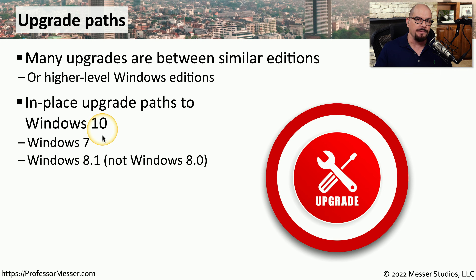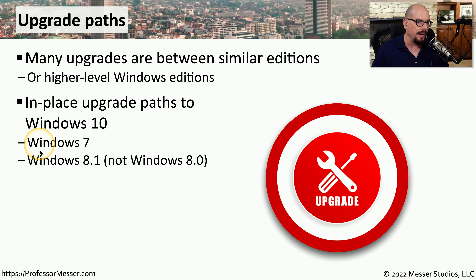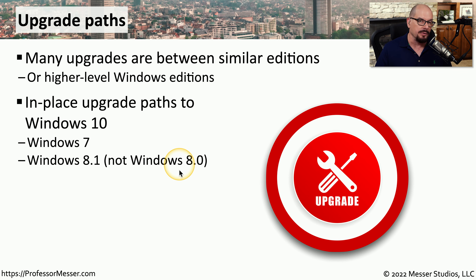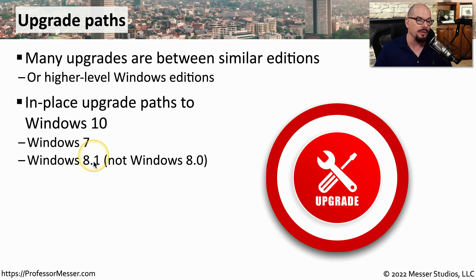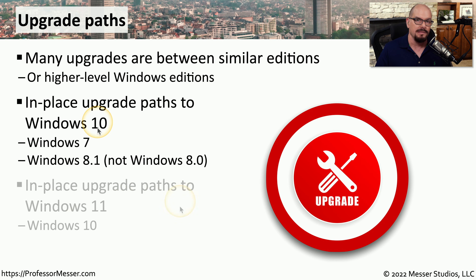Generally speaking, if you need to perform an upgrade to Windows 10, you can perform an in-place upgrade from Windows 7 and Windows 8.1. You do want to note that you're not able to perform an in-place upgrade if you're running Windows 8.0. You would first need to upgrade to Windows 8.1 and then upgrade to Windows 10.